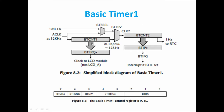The output from BTCNT1 is used for driving LCD modules — Basic Timer 1 is needed for driving LCD modules. Note this is not supported for LCD_A found in newer MSP430 versions. In BTCNT2, there are BTIX bits which can generate different intervals and set an interrupt flag. From BTCNT2 I can also get a 1 Hz clock to an RTC (real-time clock), meaning Basic Timer 1 can provide real-time clock output in terms of seconds.